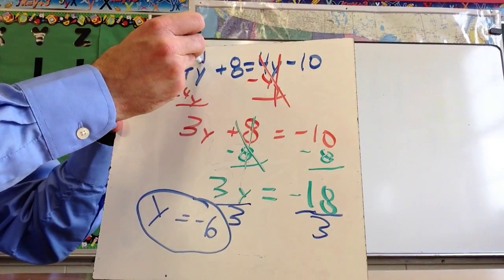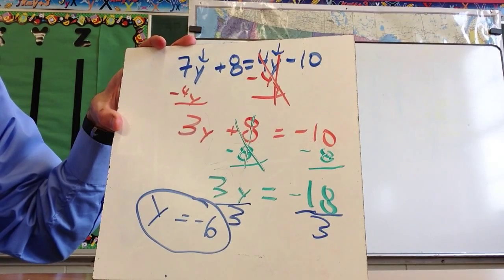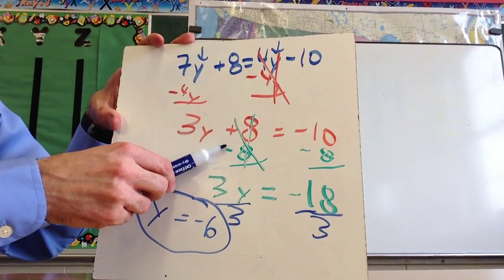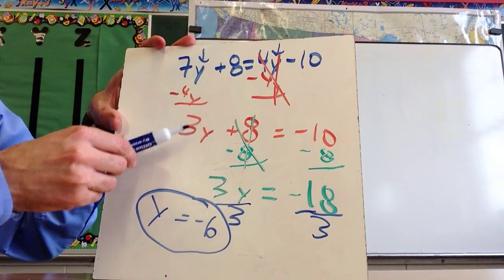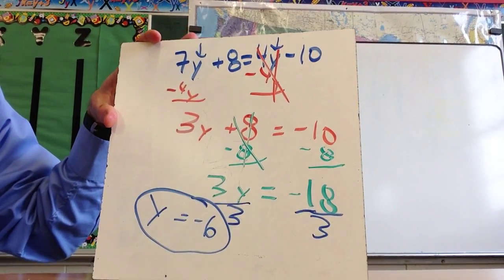Now I could take this negative 6, I could substitute it in here, and substitute it in here, just to make sure that this works, and that it's true on both sides. Also remember that I could have subtracted 8 first, and then subtracted 4y, and I would have ended up getting to this exact same step. Either way would work.